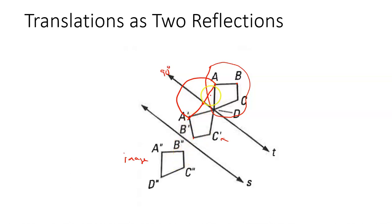When you reflect something, the points closest to the line of reflection move the least, and the ones furthest away move the most. For example, if point D is on the line of reflection, it doesn't move at all. Point B, being furthest away, ends up furthest on the other side. So you can translate a figure by reflecting it across two lines that are parallel to each other — two reflections across parallel lines S and T produce a translation.